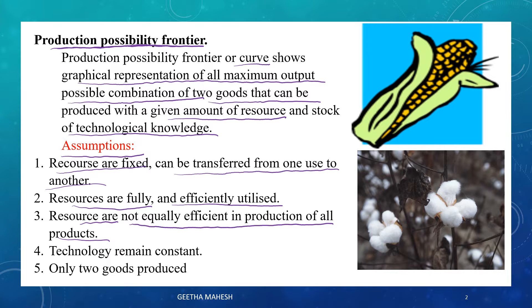For example, land may be best suited for the production of rice, but the same land may not be best suited for the production of apple. The fourth assumption is that technology remains constant and will not change. Finally, only two goods are produced. In our example, we consider only two goods — corn and cotton — which we can represent in an L-shaped diagram with one good on the x-axis and one on the y-axis.